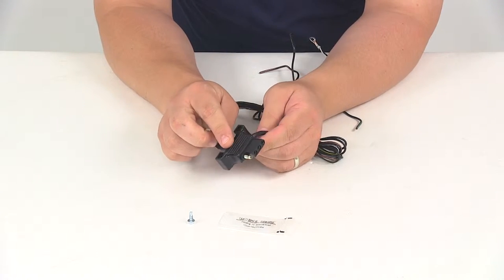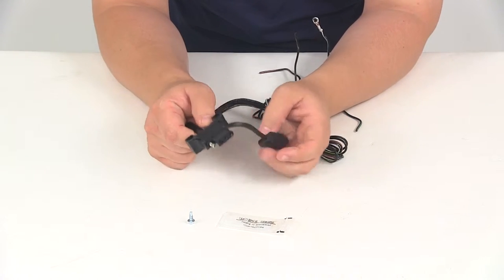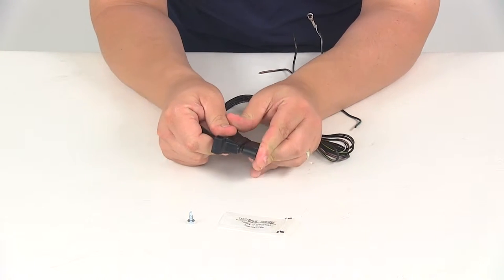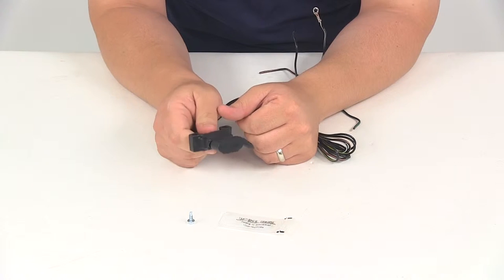It's got the heavy-duty housing with the included dust cover that's already pre-attached to the housing. That's designed to go over the connection points and protect them from the elements when your connector is not in use.